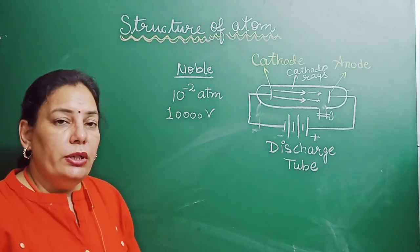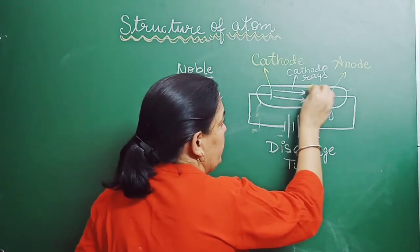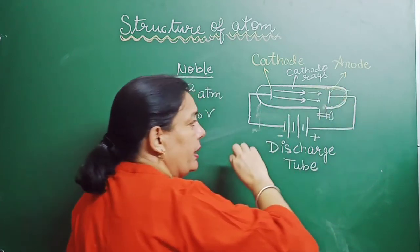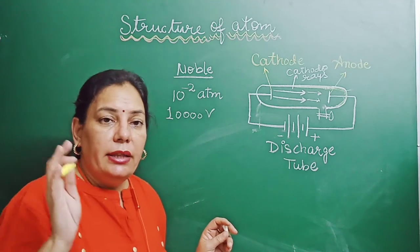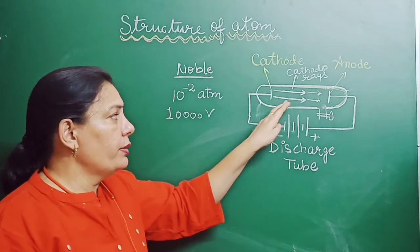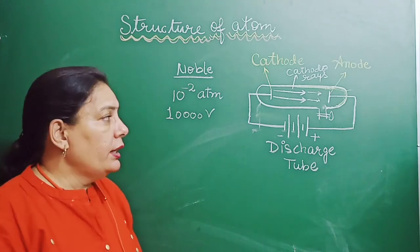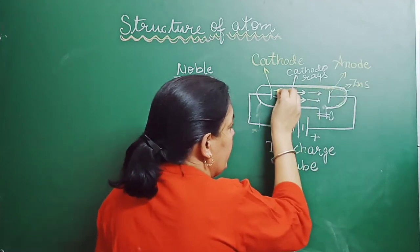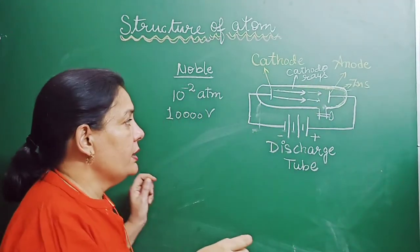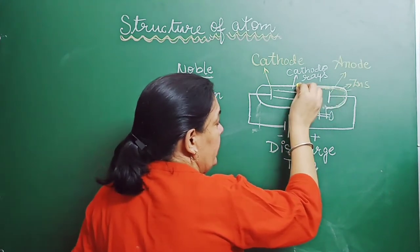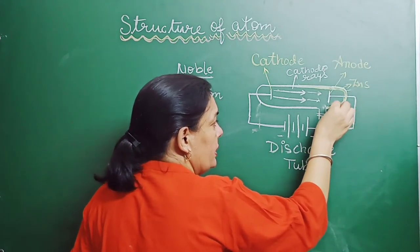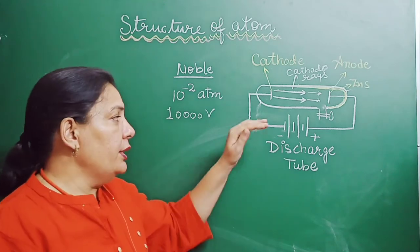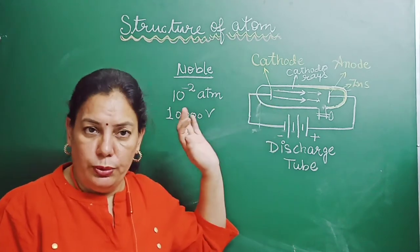But these rays are invisible. So to study these rays, a coating of zinc sulfide is applied inside the tube. When these cathode rays hit the zinc sulfide layer, a particular color of light is emitted. The color of light depends on the nature of gas which is filled in the discharge tube. When cathode rays hit the zinc sulfide layer, ionization of the gas occurs and a particular color glows depending on the nature of the gas filled inside the tube.